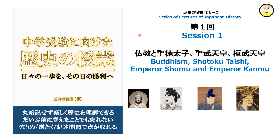Let's start the lecture on Japanese history. The background is that I wrote a Kindle book for elementary school students in Japan, and I would like to introduce the contents of Japanese history to foreign people in English based on my knowledge. This is the first session, and I would like to explain the relationships among Buddhism, Shotoku Taishi, Emperor Shomu, and Emperor Kanmu.